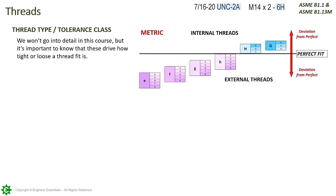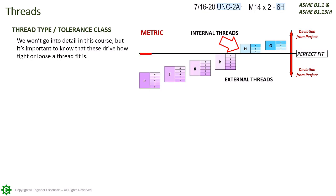Here is a simplified chart showing some metric tolerance classes. Using our metric example, the fact that the H is a capital letter tells us that we have an internal thread. The H itself tells us that we have a tight tolerance, since it is closer to the perfect fit line. The 6 puts it in the middle of the H range of tolerances.